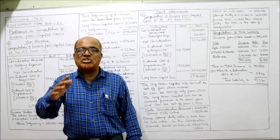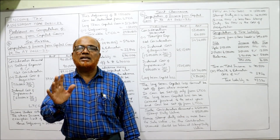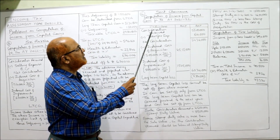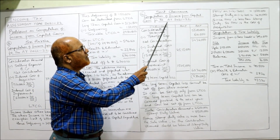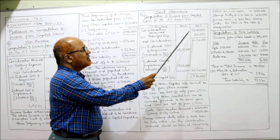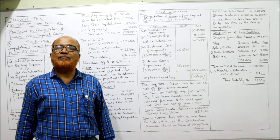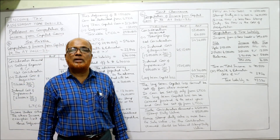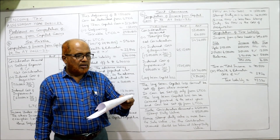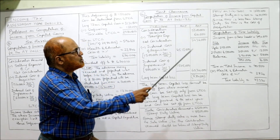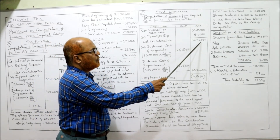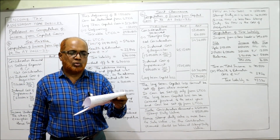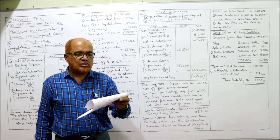Whichever is higher is the consideration. Here Rs. 55 lakh is the consideration. Computation of income from capital gain for Srimati Chendamma: consideration received is Rs. 55 lakh — the stamp duty value which is more than the actual sale value. Selling expenses of Rs. 64,000 are deducted, giving net consideration of Rs. 54,36,000. The cost inflation index in 2001-2002 is 100.